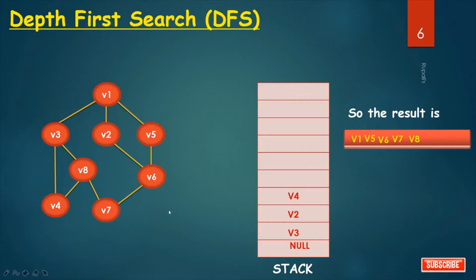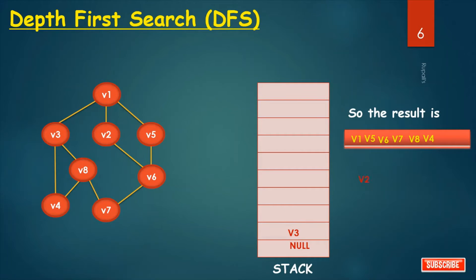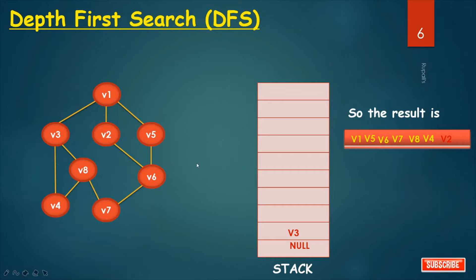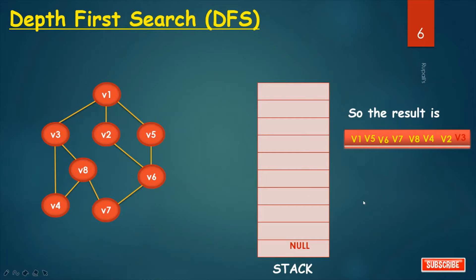Now it is time to pop. Pop V4, print V4, and check the connected nodes: V3 and V8. V3 is in status 2 and V8 is in status 3, so no node to be pushed. Then pop V2 and print V2. Connected nodes of V2 are V1 and V6 — both in status 3, so no node to be pushed. Then pop V3 and check its connected nodes: V1, V8, and V4 — all are in status 3. This is the result of DFS traversal.